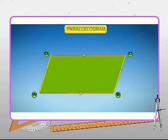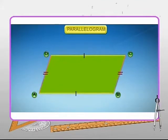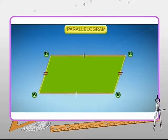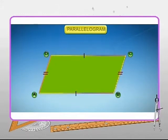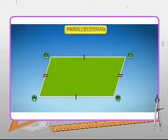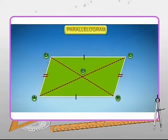In a parallelogram, the two pairs of opposite sides are not only parallel but also equal in length. In the figure, side AB is equal to side DC and side AD is equal to side BC. The diagonals of a parallelogram bisect each other. In the figure, AO is equal to OC and BO is equal to OD.